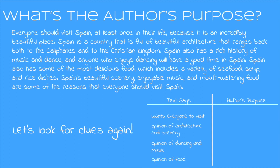Let's take a look at our graphic organizer and see if we can figure out what the author's purpose is. The text tells us the author wants everyone to visit, tells us the author's opinion of architecture and scenery, their opinion of dancing and music, and their opinion of the food. So now we have to ask ourselves: does the author want to teach us something, or convince us of their opinion? The author is trying to persuade or convince you to visit Spain. Remember, that was the first detail we listed — 'everyone should visit Spain' — and it was so important they said it twice. So that's the author's purpose in writing this.